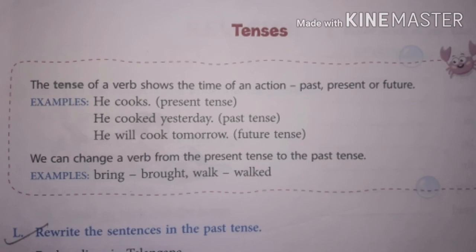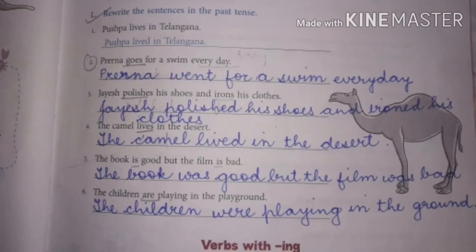Now we come to the last topic: Tenses. A tense of a verb shows the time of an action — it can be past, present or future. He cooks — present tense. He cooked yesterday — past tense. He will cook tomorrow — future tense. We can change a verb from present tense to past tense. Example: bring becomes brought in the past tense. Walk becomes walked in the past tense. Now all of you do the exercise: Rewrite the sentence in the past. Pause the video and when you finish, check the answers with me. The first one is already done for you.